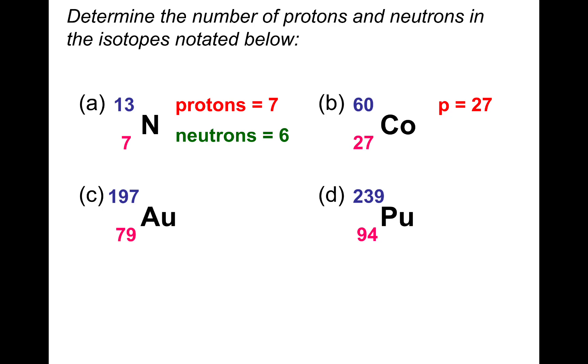Cobalt would have 27 protons given by the atomic number at the bottom. And then the number of neutrons would be the total mass minus the number of protons. So 60 minus 27 which gives us 33. Gold: 79 protons, that's the atomic number. Neutron number: take the total mass, 197, subtract the 79. So that gives us 118 neutrons. Plutonium: 94 protons, just the atomic number. Total number of neutrons would be the difference, 239 subtract 94, 145 neutrons.